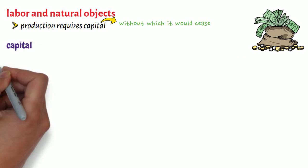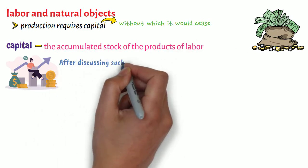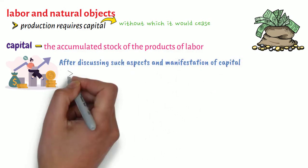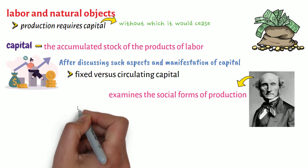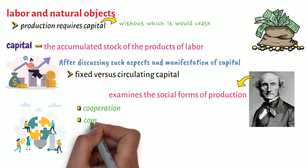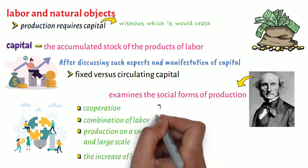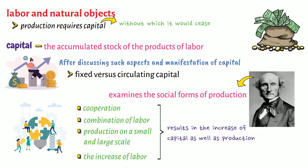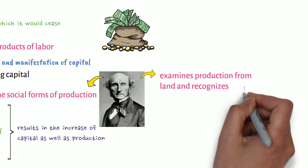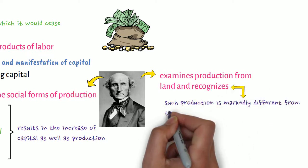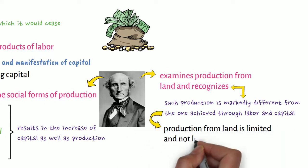In essence, capital is the accumulated stock of the products of labor. After discussing such aspects and manifestations of capital, such as fixed versus circulating capital, Mill examines the social forms of production, such as cooperation, combination of labor, production on a small and large scale, and the increase of labor, which results in the increase of capital as well as production. Last, Mill examines production from land and recognizes that such production is markedly different from that achieved through labor and capital, since production from land is limited and not likely to greatly increase.